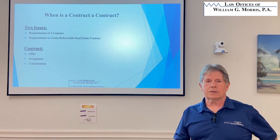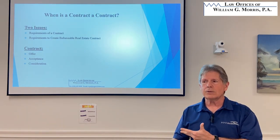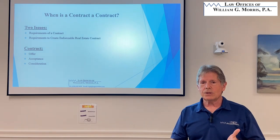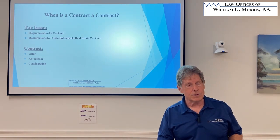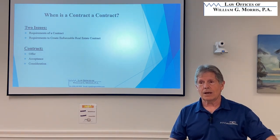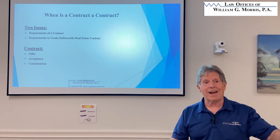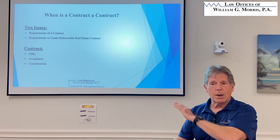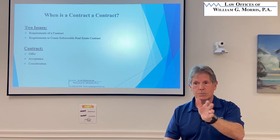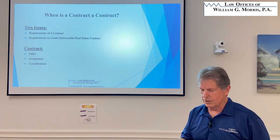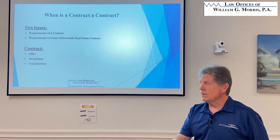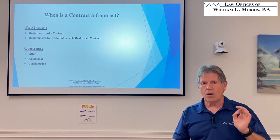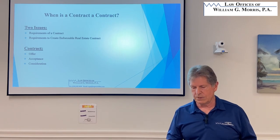The other thing you have to have is consideration. Those are the three black letter rules of law for a contract: an offer and an acceptance supported by consideration. Consideration has been watered down over the years — now all we need are the mutual promises in the contract to perform. Remember: offer, acceptance, and consideration. If you've got an offer and an acceptance, you may not have a contract unless you've got all material terms included.